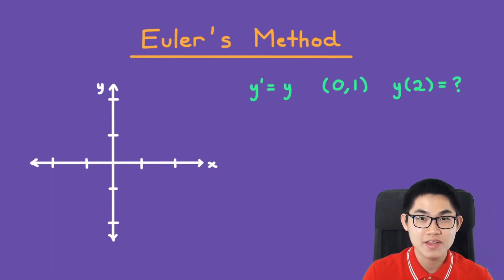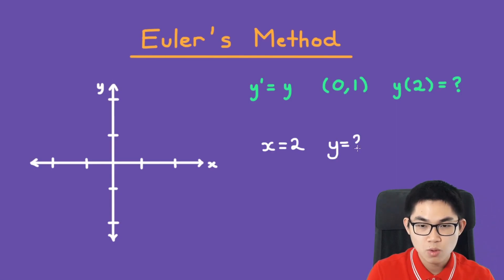So let's say you're given a differential equation, y' is equal to y. You're also given the initial value at (0,1). And the problem wants you to estimate what is y at 2. So basically what this means is when x is equal to 2, what is y going to be? And with Euler's method, you can approximate this value.